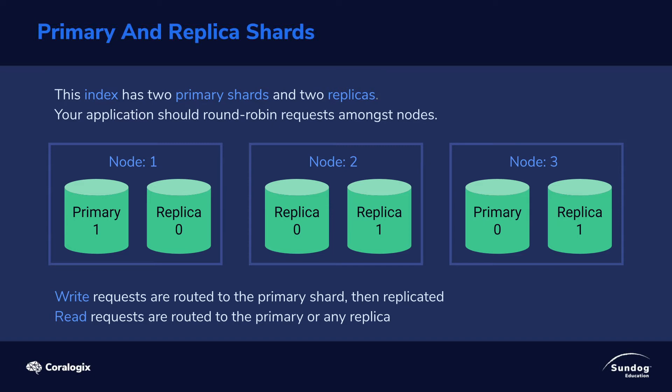Elasticsearch figured this all out for you automatically. It's a big part of what Elasticsearch provides on top of Lucene — it manages this redundancy for you. If you say you want an index with two primaries and two replicas, it's going to set things up like this if you gave it three different nodes.